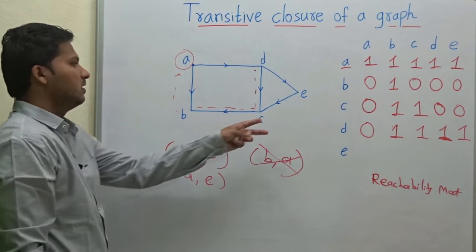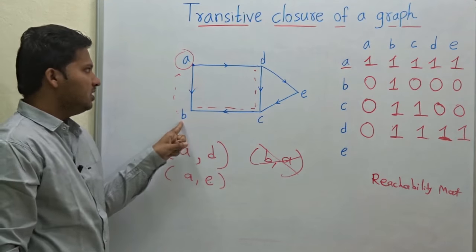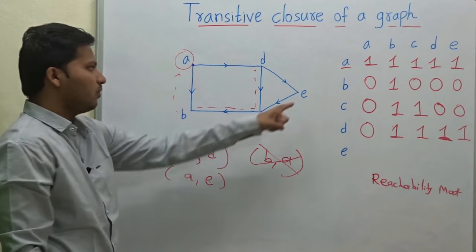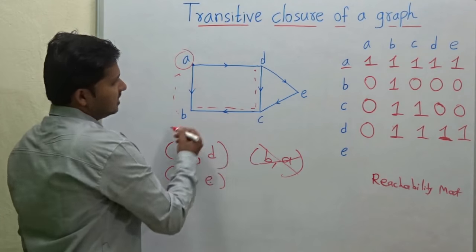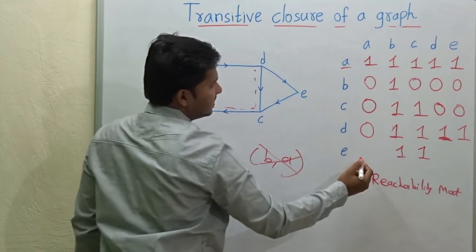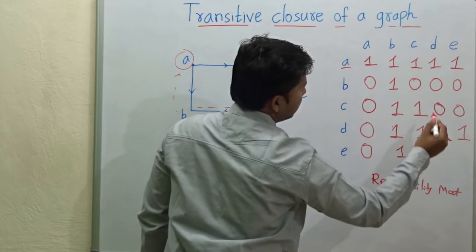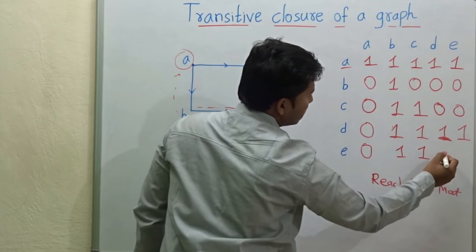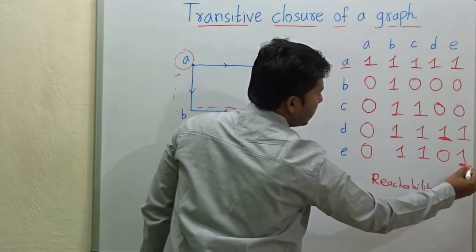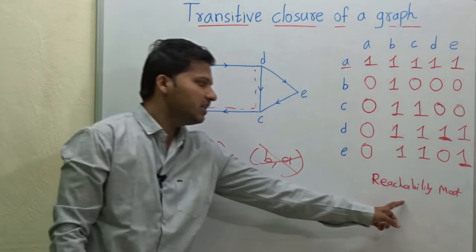Now for vertex E, check where you can reach. You can reach to vertex C, then vertex B. So these are the two vertices where you can reach from vertex E — C and B, so 1, 1. From vertex E, you cannot reach vertex A, so that is 0. Then from vertex E, you cannot reach D, so that is 0. From vertex E to E, that is 1. So this is the reachability matrix.